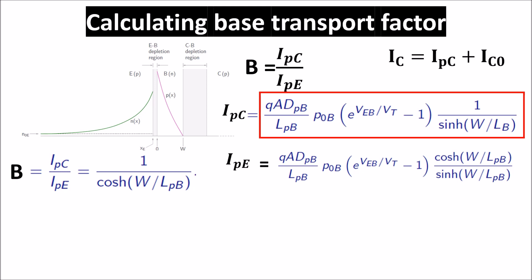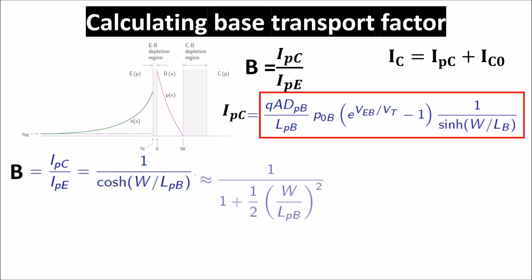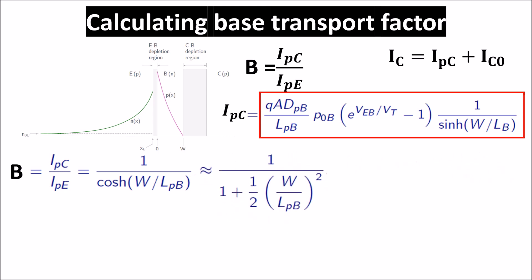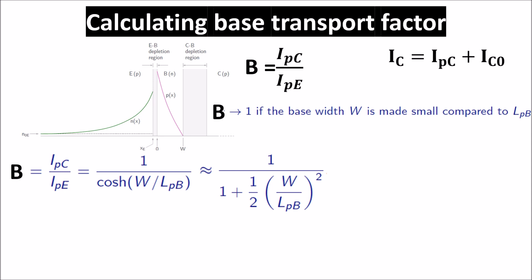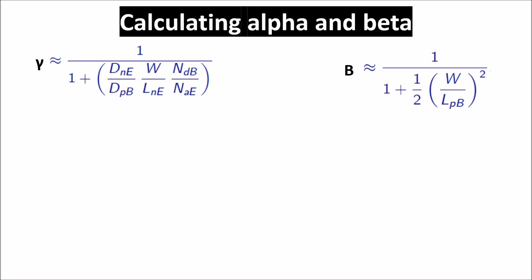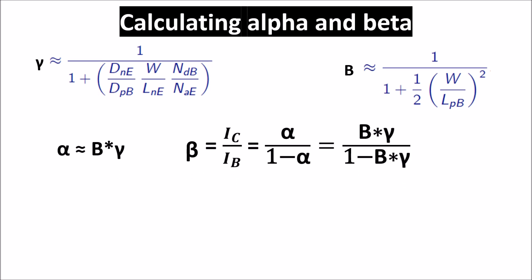If W were zero, hyperbolic cosine would be 1, giving a perfect base transport factor of 1 with no recombination in the base. While W cannot be zero, we should make it as small as possible. If W is much less than LPB, we can simplify the expression to see clearly that as W decreases relative to LPB, the base transport factor approaches 1. Knowing both gamma and the base transport factor, we can calculate alpha and beta. Beta is the gain factor of the BJT and a very important parameter. Acting on doping and base width, we can improve gamma and base transport factor, thus improving alpha and beta.